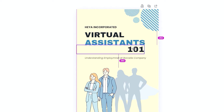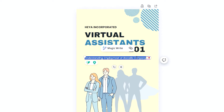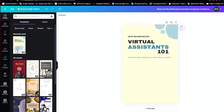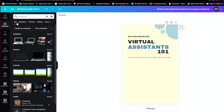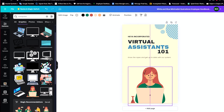Now let's change the alignment — I'll place it here. This is just my idea; you don't need to copy exactly what I'm doing. Right now let's change these words to something like 'Know the ropes and get up to date with our system.' I'd also like to change the image element to something that matches the virtual assistant job — of course a computer or the internet. I'll use this image of a woman at a computer and enlarge it.